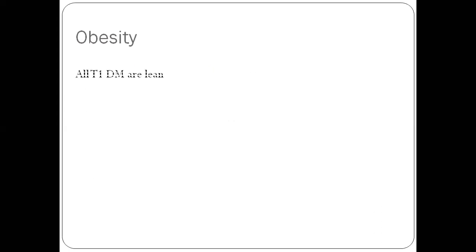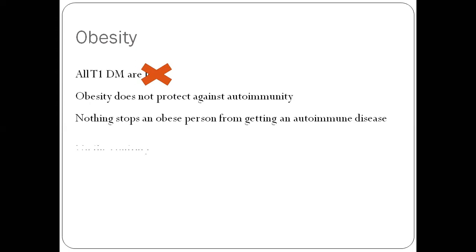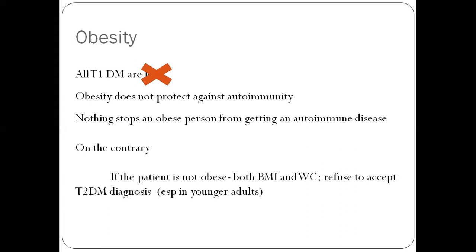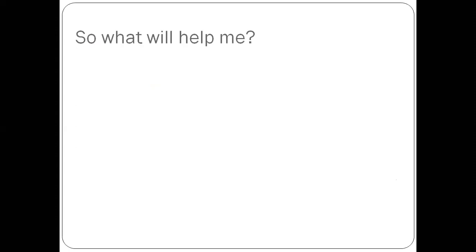Coming to obesity. The misconception is that all type 1 diabetes are lean. That is not correct. Obesity does not protect against autoimmunity and therefore an obese person can also have type 1 diabetes. On the contrary, if you find a patient who is not obese, both in terms of BMI as well as waist circumference, you should refuse to accept a diagnosis of type 2 diabetes, especially if the patient is not old. Obese patient can have type 1, but a lean patient having type 2, that is very odd.